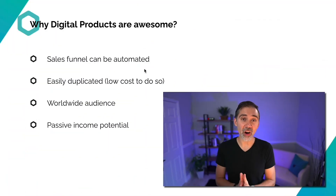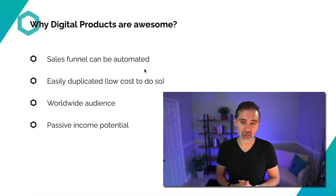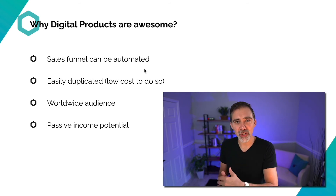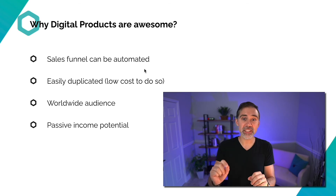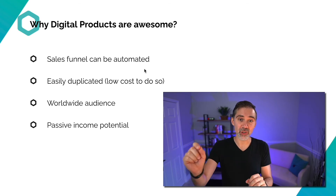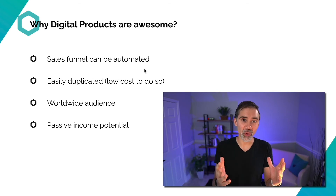Digital products are easily duplicated and also very easy to maintain. Let's say you have an eBook, for example, and you want to update a section. You just go there on the document, update the section, and publish that to Amazon. If you have a real book, a physical book, and you want to update that, that's almost impossible — people already bought your book, it's complicated. With digital products, we have this flexibility.